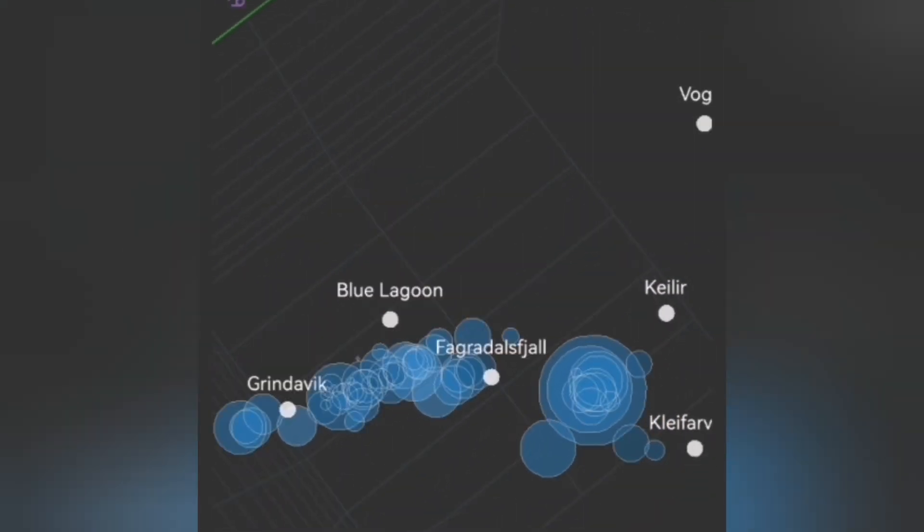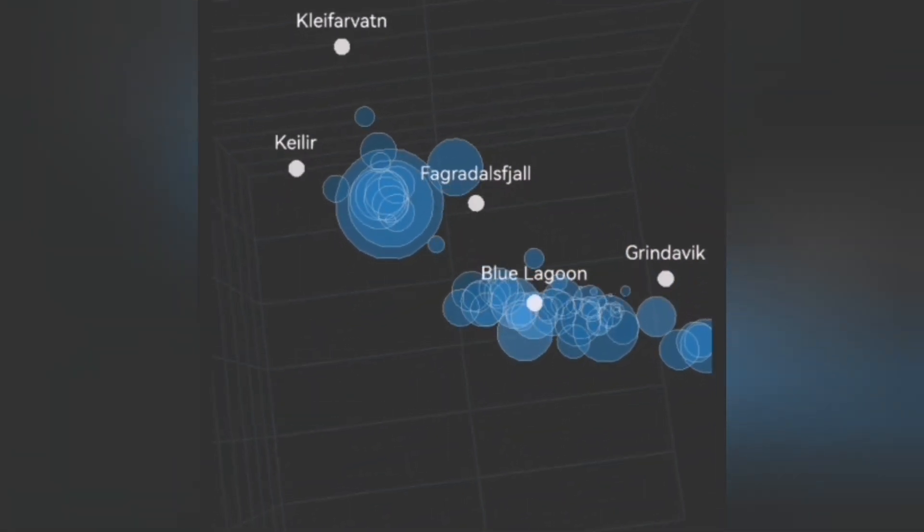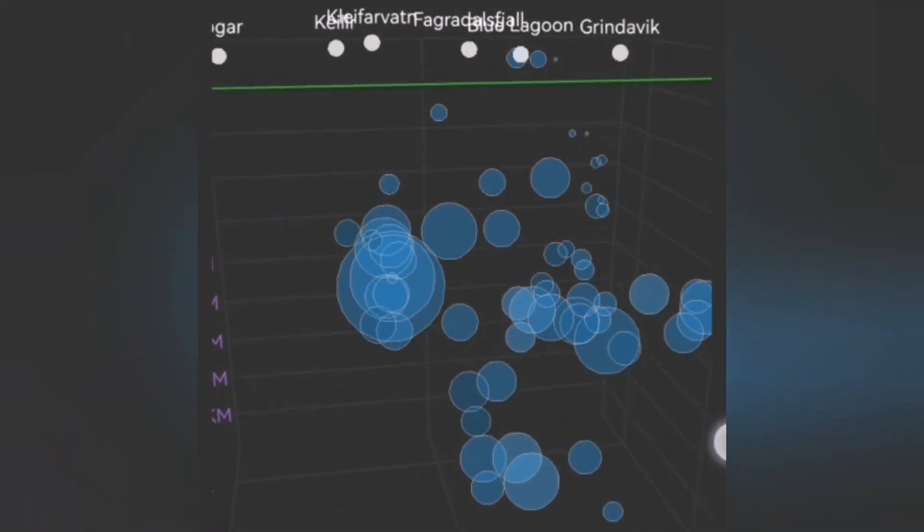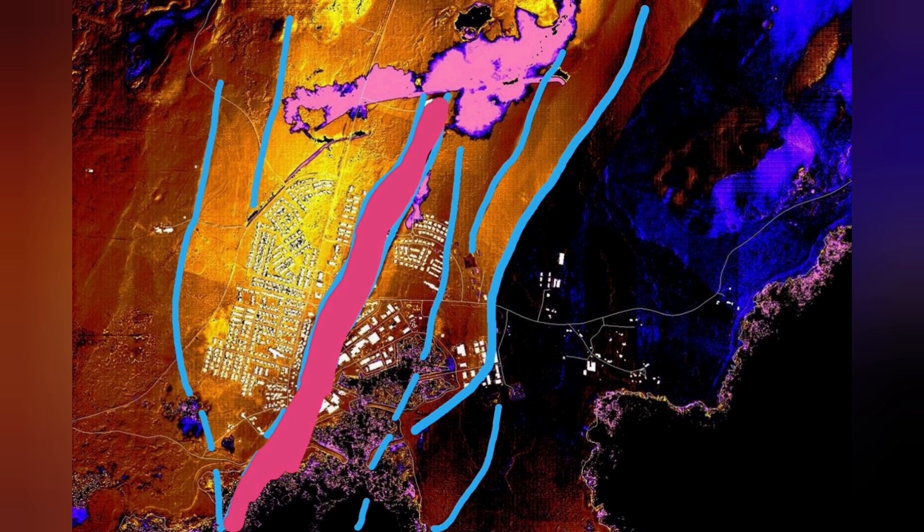Before that, we had it to the north of Grindavík, in Hagafell and Sundhnúkar, we had eruptions. In November, we had the earthquake, then December, eruption, and January, again, eruption.